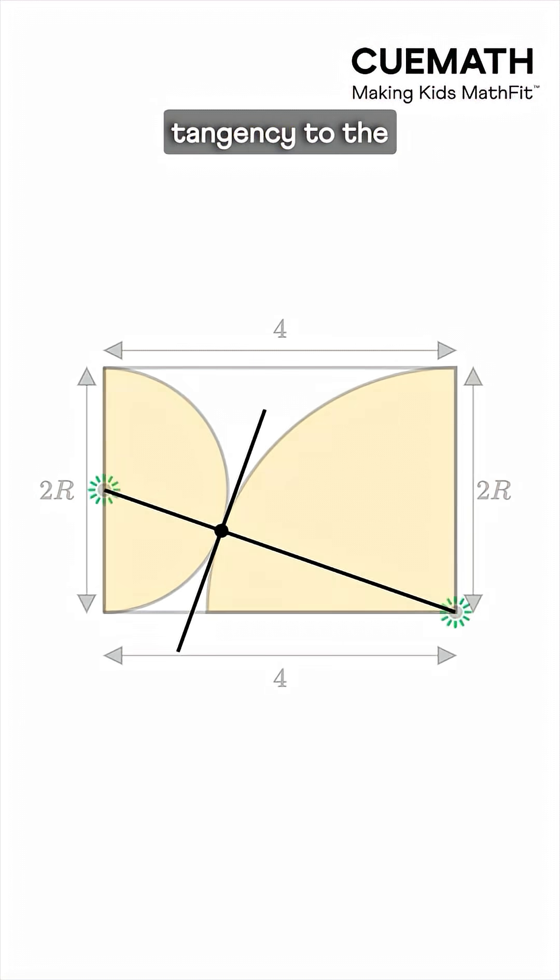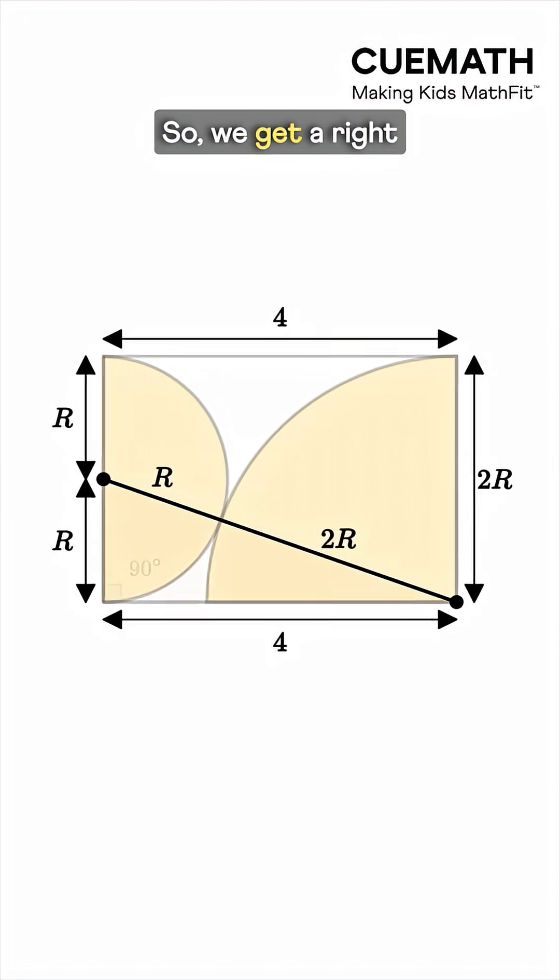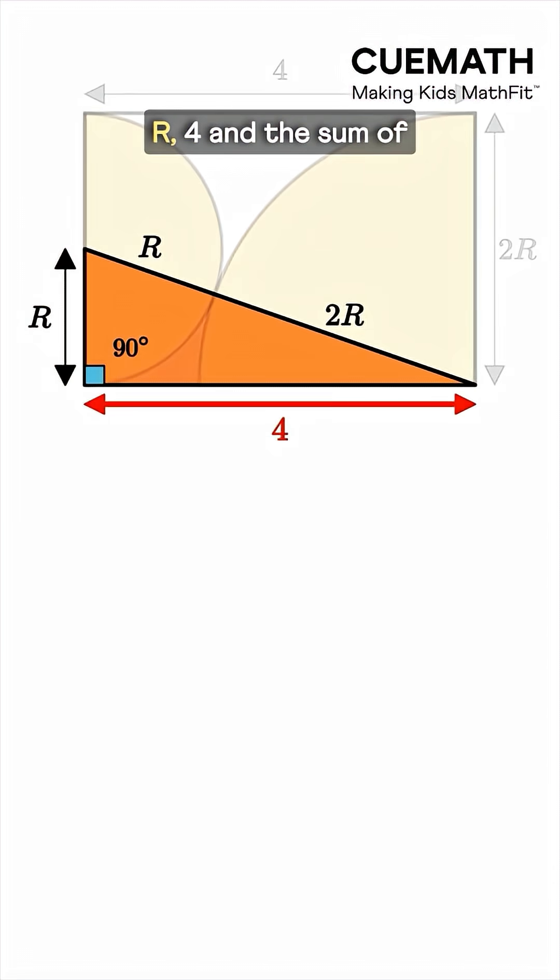Joining the point of tangency to the centers of the two circles gives two lines, both perpendicular to the common tangent, meaning these lines lie on the same straight line. So we get a right triangle with sides r, 4, and the sum of these two radii, 3r.